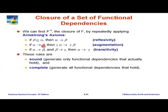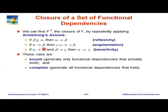Given a set of functional dependencies F, we repeatedly apply Armstrong's axioms to infer new things. The first rule is called reflexivity — if beta is a subset of alpha, then alpha determines beta. Using this we can generate all the trivial dependencies. The second is augmentation: if alpha determines beta, then gamma alpha determines gamma beta — we are adding something to the left-hand side to infer a new dependency. The third is transitivity, which we have already seen: if alpha determines beta and beta determines gamma, then alpha determines gamma.